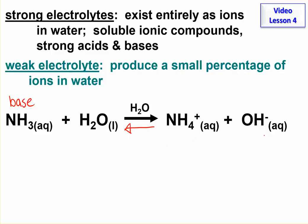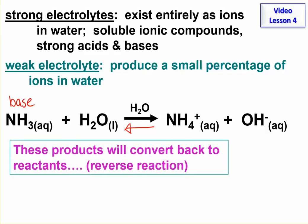Another way to say that is because these are constantly going back and forth, if you look at any one point in time, only a fraction of it is in the ion form and a fraction of it is always in the molecular form. It's weak because it's not 100% ionized. Watch for the reversible arrow — that will tell you when something is weak.